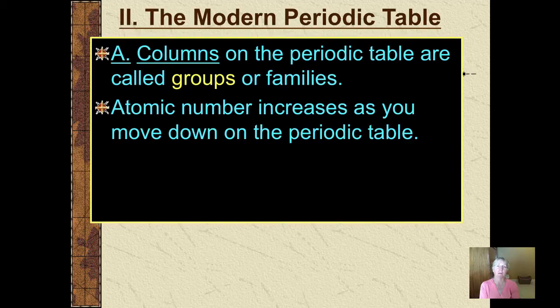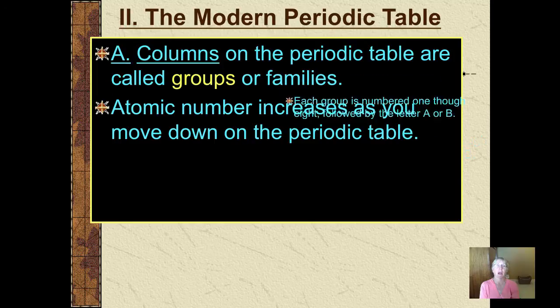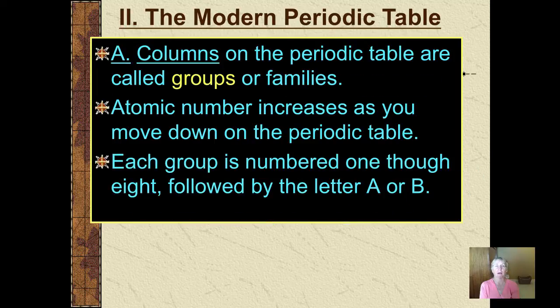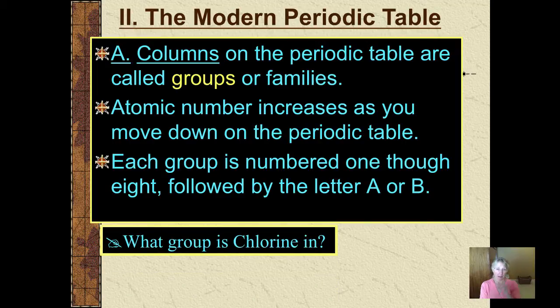Like the members of a human family, elements in the same vertical column often have similar chemical and physical characteristics. As you move down a column on the periodic table, the element's atomic number increases. As you saw on the previous slide, the Roman numeral groups are followed by a letter A or B.